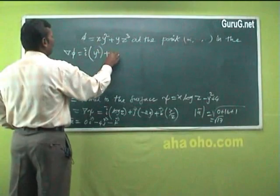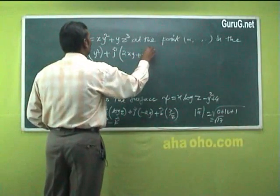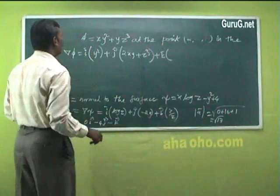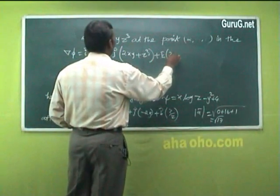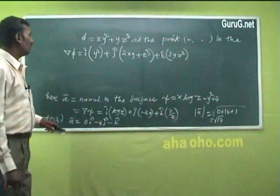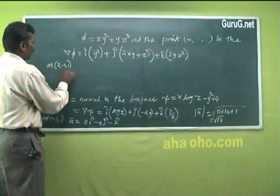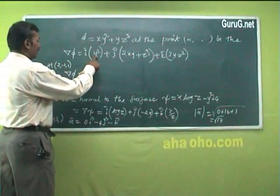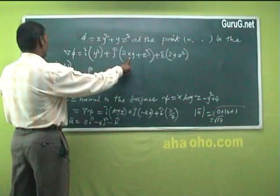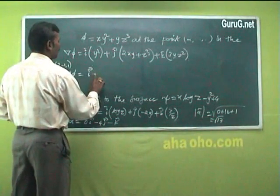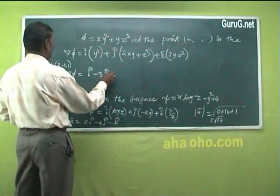Now compute del φ for φ = xy² + yz³ at point (2, −1, 1). Del φ = i·(y²) + j·(2xy + z³) + k·(3yz²). At (2, −1, 1): i·(1) + j·(2(2)(−1) + 1) + k·(3(−1)(1)) = i − 3j − 3k.